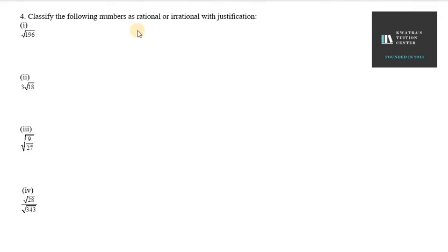Hello everyone, let's start with question number 4. It says classify the following numbers as rational or irrational with justification.